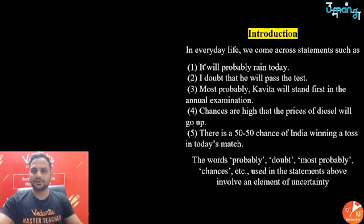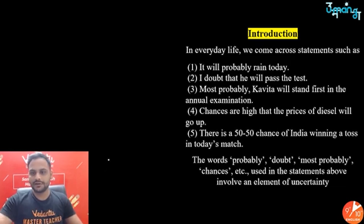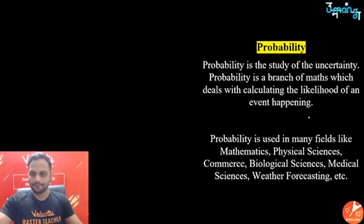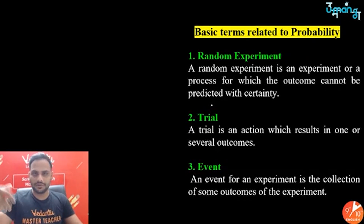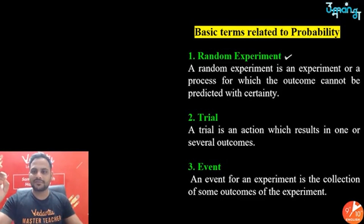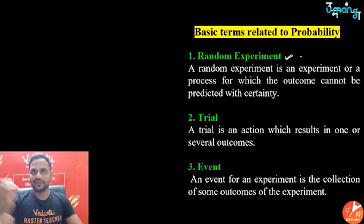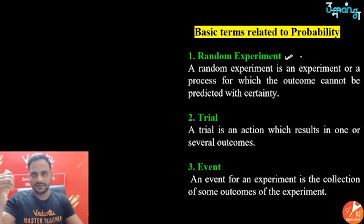Probability means calculating the chances of happening of something. It is a study of uncertainty — a branch of maths which deals with calculating the likelihood of an event happening. Now, some vocabulary: a random experiment is an experiment in which we don't know what the outcome will be. For example, if I toss a coin, I don't know whether head or tail will come.